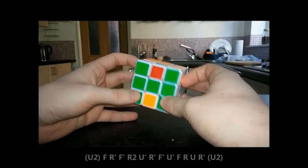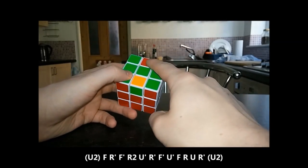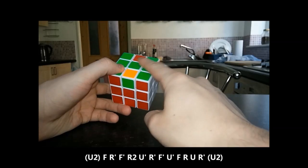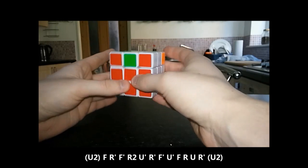My first example is this T perm with the corners at the back and the two edges, but they're also flipped as well. There are a couple of different algorithms for this but the one I use is this.